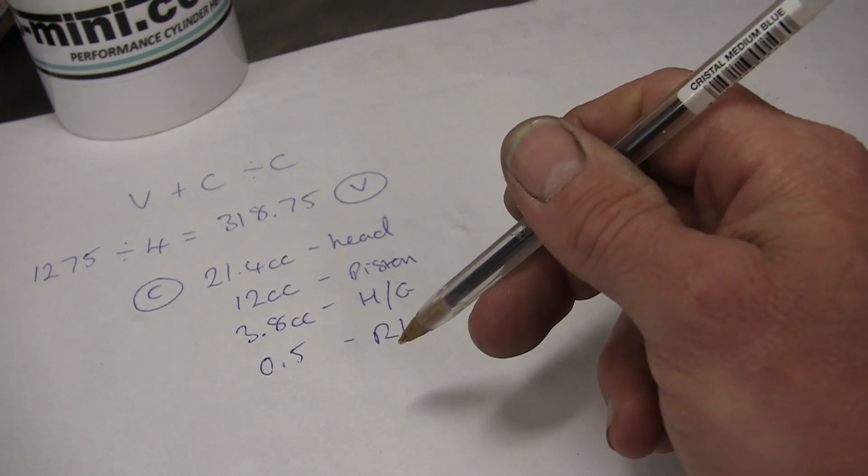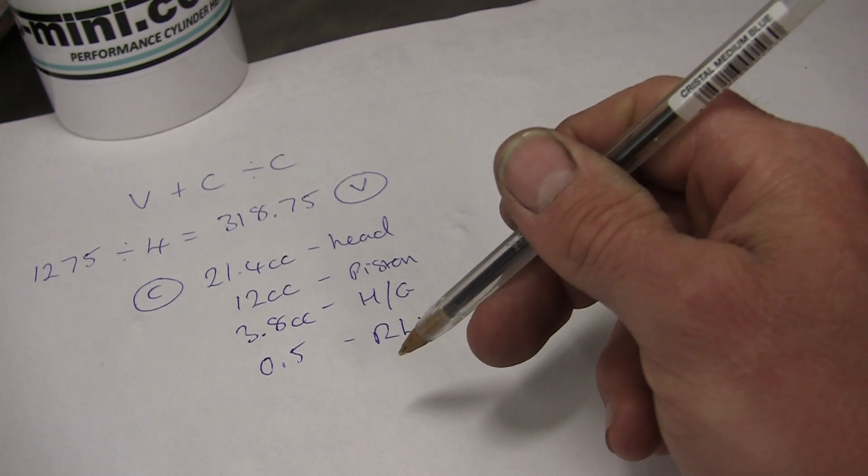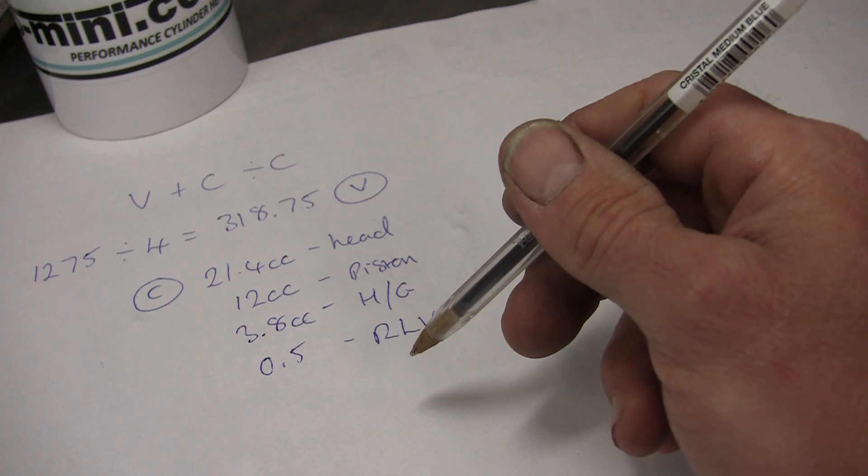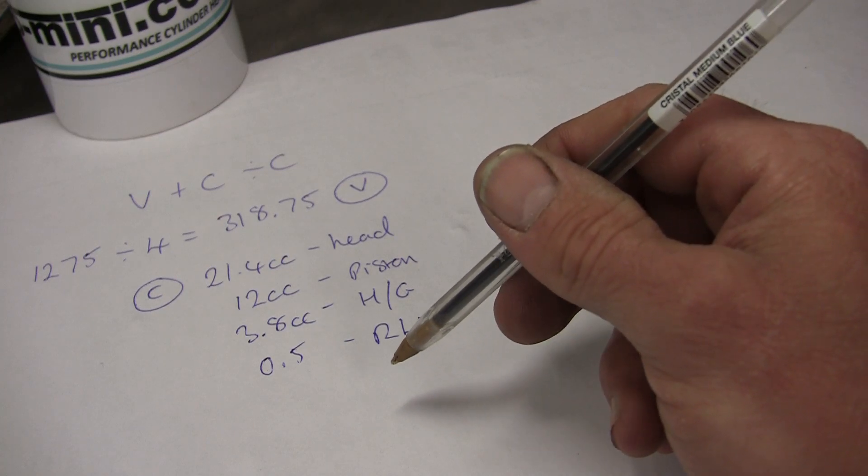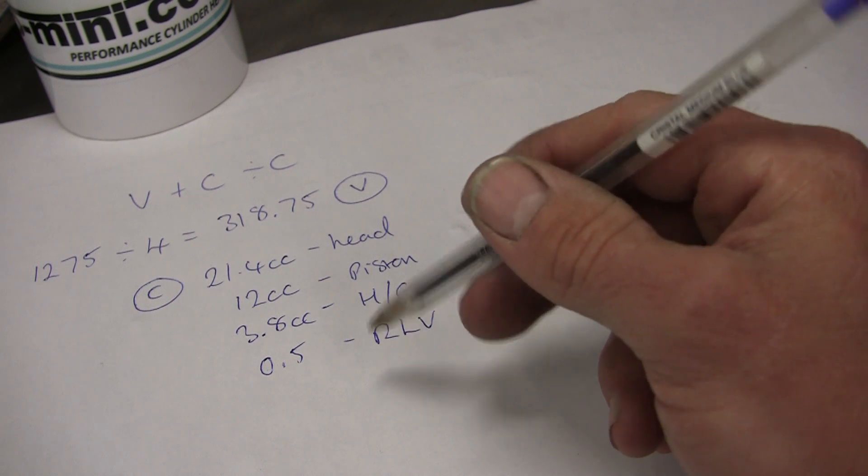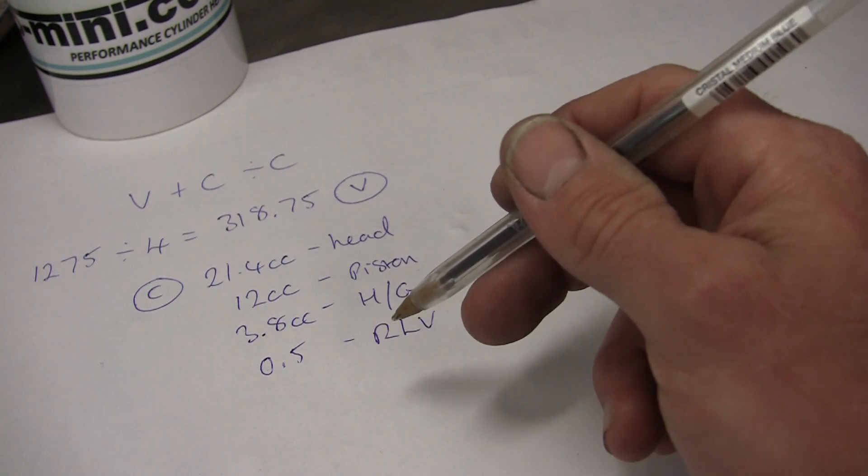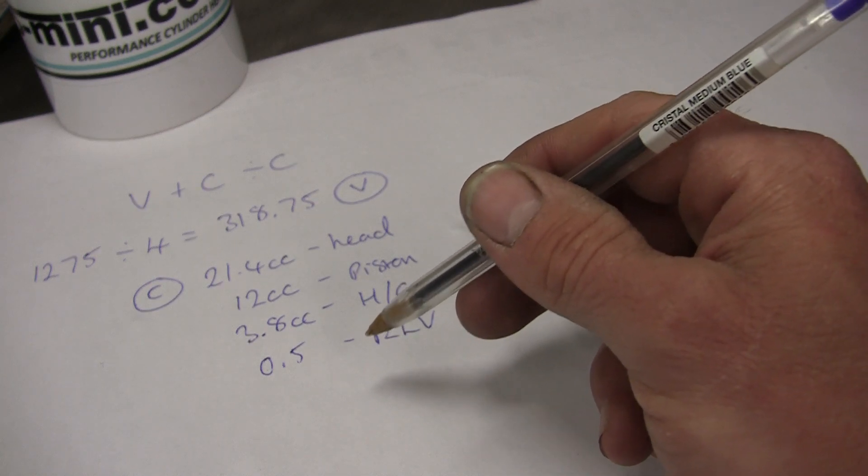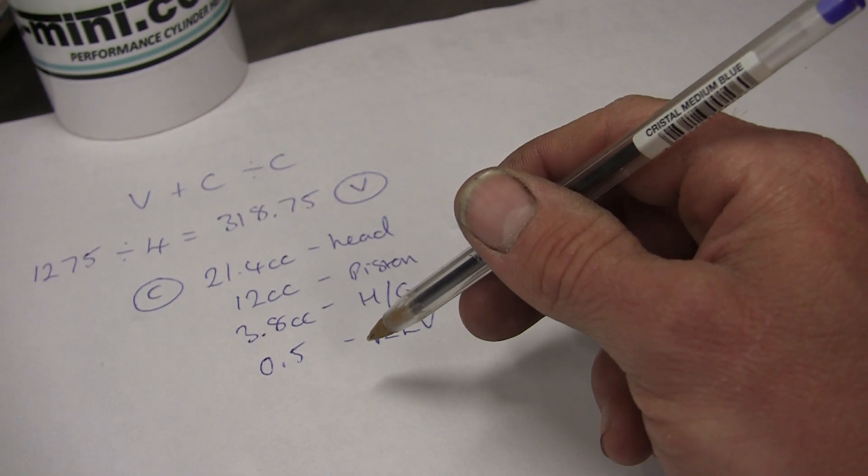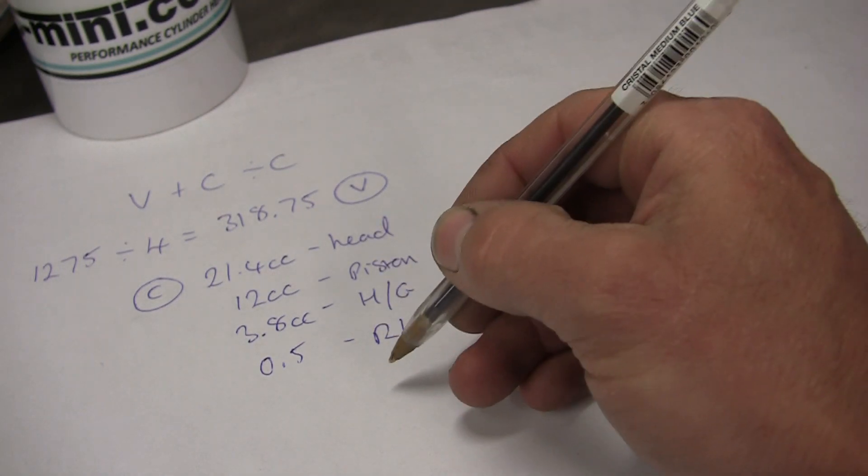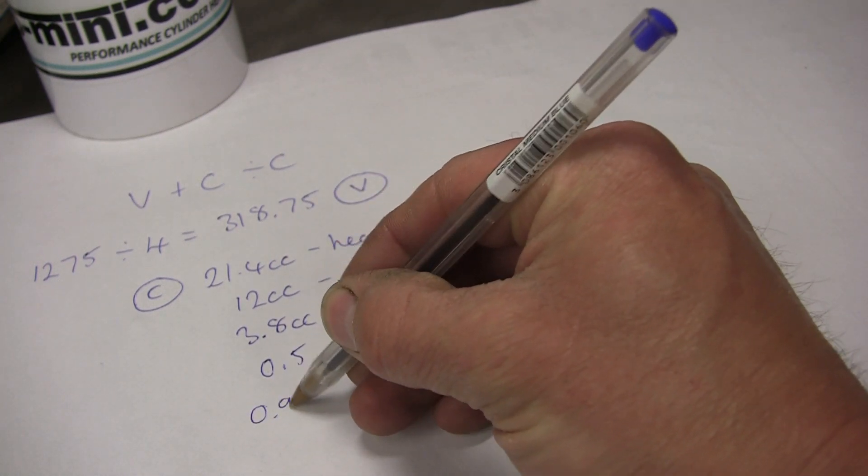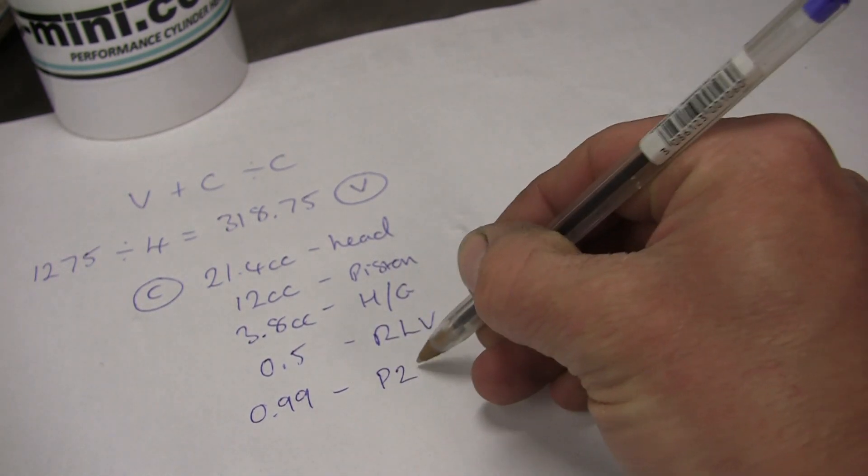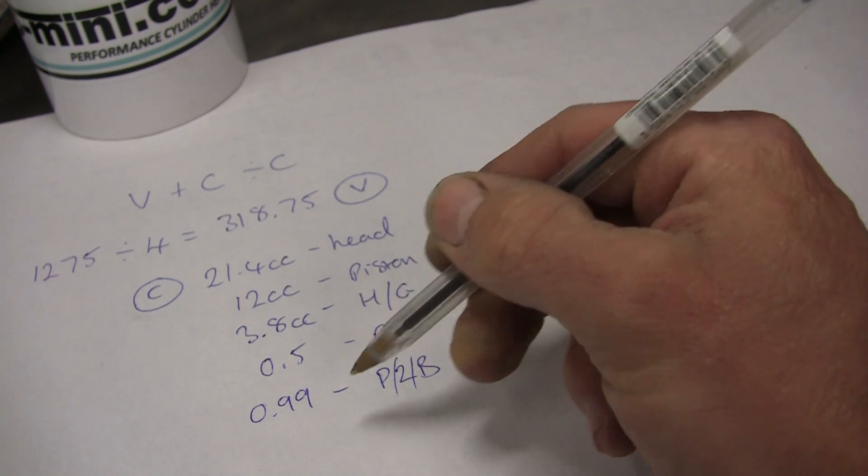If the engine's modified, you might find the block's been skimmed to bring the piston flush or close to flush, or even above the deck, which would make a negative volume. But generally, on a factory engine, you'll find it sits about 10 thou or so down the bore. On the standard 1275 bore with the piston sitting 10 thou down, there's about 0.99 cc, almost one cc.